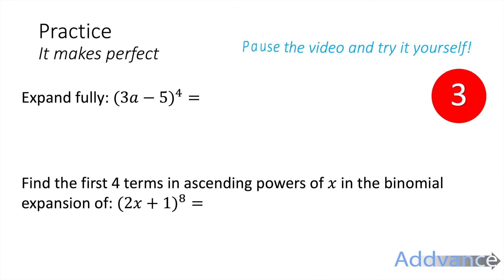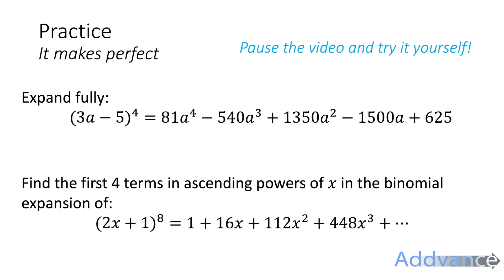I hope that makes sense. Please feel free to watch the video again and try the examples yourself. If you get those right, also try these on-screen questions: expand (3a − 5)⁴, and for (2x + 1)⁸ find only the first four terms in ascending powers of x. Pause the video now and see if you can get the right answers.